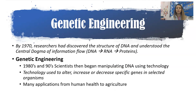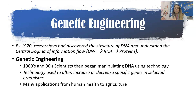Now we're going to get into the fun stuff, which is the actual use of biotechnology to manipulate DNA. Genetic engineering is when you have technology being used to alter, increase, or decrease specific genes in selected organisms. By 1970 we knew that information flowed from DNA to RNA and then produced proteins leading to traits, but it wasn't until the 1980s and 1990s when technology improved that we were able to actually go in and manipulate the DNA of organisms.